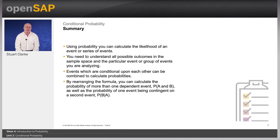In summary, using probability you can calculate the likelihood of an event or series of events. You need to understand all possible outcomes in the sample space and the particular event or group of events you are analysing. Events which are conditional upon each other can be combined to calculate probabilities. By rearranging the formula you can calculate both the probability of more than one dependent event — P(A and B) — as well as the probability of one event being contingent on a second event — P(B given A). The next unit will be introducing you to Bayes' theorem.